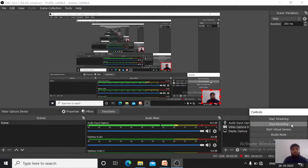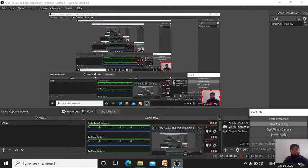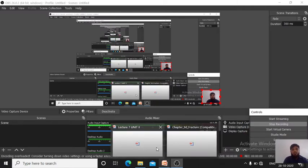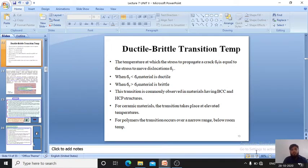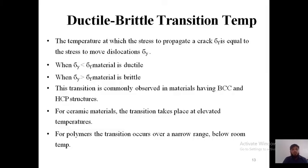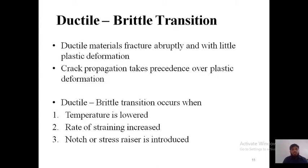Welcome to online classes of metallurgy and material science. Today we are discussing ductile to brittle transition which we introduced in yesterday's class. We'll see how materials transition from ductile to brittle and what are the reasons behind it. Yesterday I discussed that all materials convert between ductile and brittle because of three main reasons: lowering of temperature, rate of strain hardening, and notch stress risers.